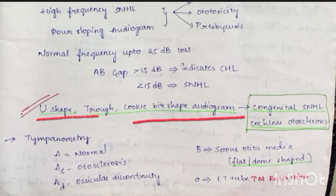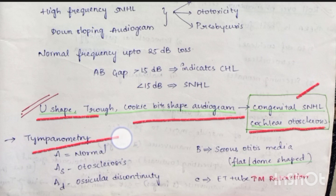A U-shaped or cookie-bite shaped audiogram is seen in congenital sensorineural hearing loss and cochlear otosclerosis. Next, let us see tympanometry. In tympanometry, graph A is normal, AS is otosclerosis, AD is ossicular discontinuity, B is serous otitis media (flat or dome shaped), and C is due to Eustachian tube blockage leading to tympanic membrane retraction.